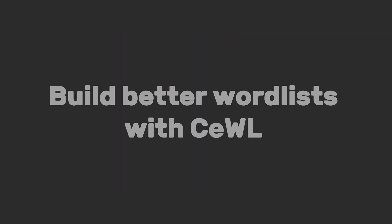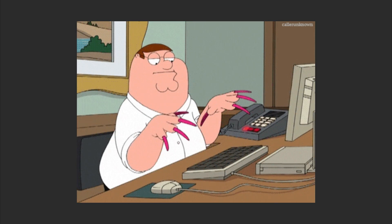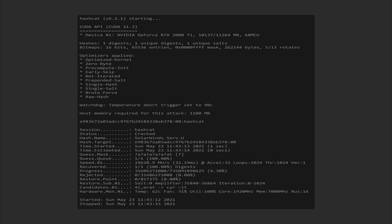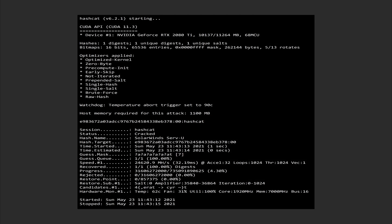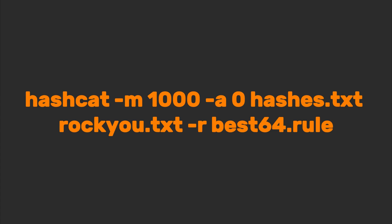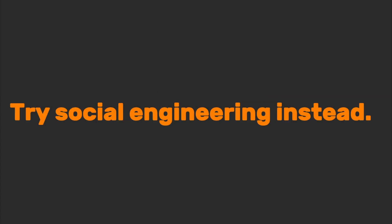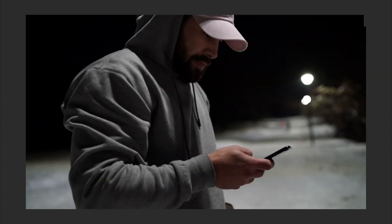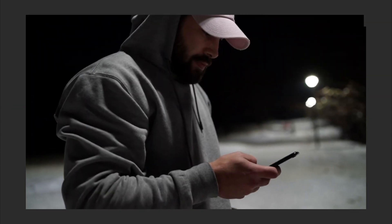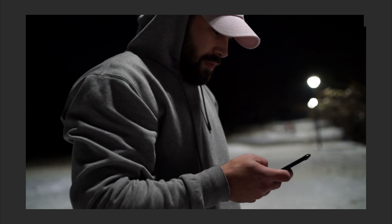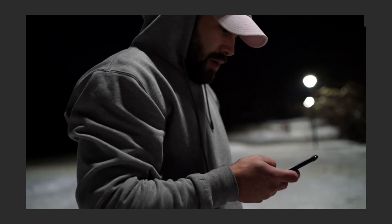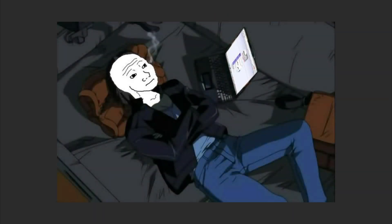Fix the mess: build better word lists with CeWL — scrape target websites for keywords. Use Hashcat with rules to mangle words. Try social engineering instead. A phishing email titled 'Your Netflix account is now free' works better than 10 hours of crunching.